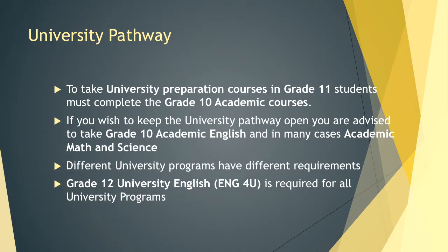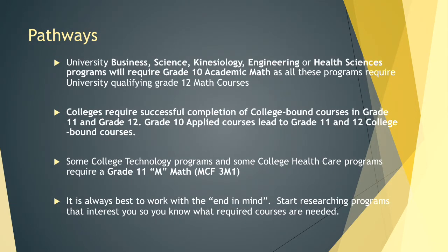If you are considering the university pathway, please note that university preparation courses in grade 11 most often require the grade 10 academic course. To keep the university pathway open, you are advised to take grade 10 academic English and, in many cases, academic math and science. For all university programs in Ontario, grade 12 university English is required. University business, science, kinesiology, engineering, or health science programs will also require grade 10 academic math, as all these programs require university-qualifying grade 12 math courses.